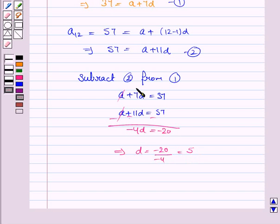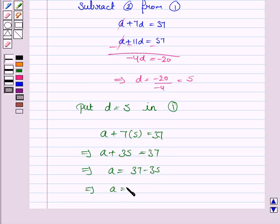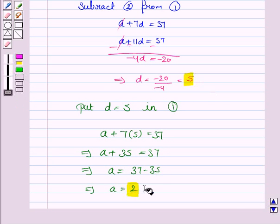Now we can easily find out the value of A by putting D equals 5 in equation 1. So we have A plus 7 into 5 equals 37. This implies A plus 35 equals 37, and this implies A equals 37 minus 35. So A equals 2.